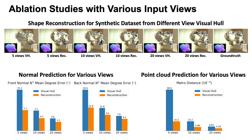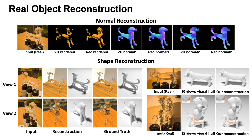In ablation experiments, we observed consistent benefits from our network, which can reconstruct even with as few as 5 to 10 views. Large improvements over the visual hull are noted for a small number of views. For real images, our network can reconstruct normals and geometry very close to the ground truth, as observed in different views, with high amounts of detail recovered even for these challenging inputs with as few as 10 to 12 views.